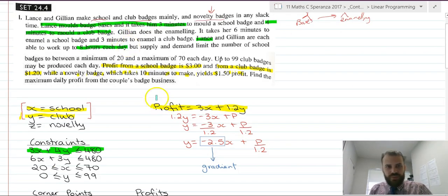Now, a constraint with the same sort of pattern. Julian's enamelling. It takes six minutes to do a school badge, and three minutes to do a club badge. And again, Julian has eight hours each day. So there's our constraint. Six times school, plus three times club, has to be less than 480 minutes.